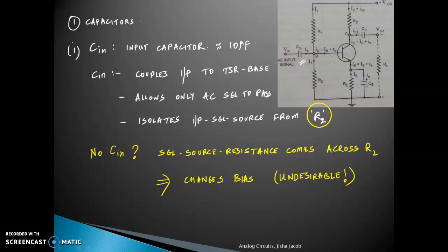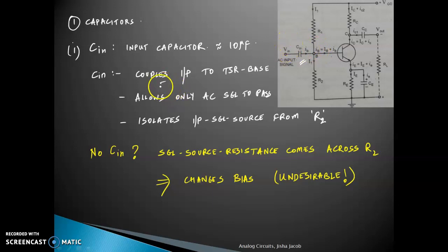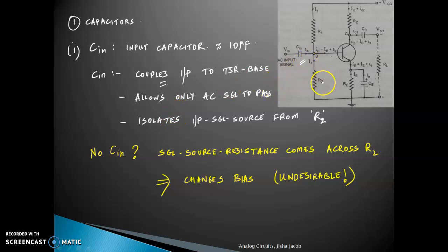Let us start with the input capacitor. The input capacitor is approximately 10 microfarads. Its purpose is to couple the input to the transistor base — the word couple can be translated as connect. It will allow only AC to pass through and will block all DC components.